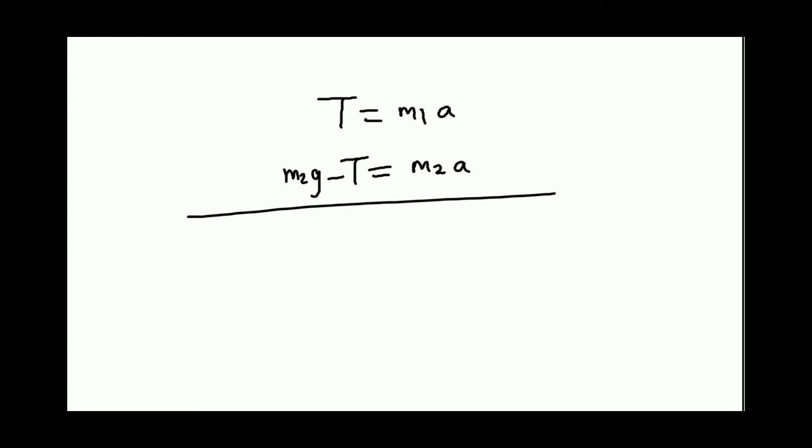When we add, we get m2g minus T plus T equals m2a plus m1a, or m2g equals, a is common. So you get a is equal to m2 over m1 plus m2 times g.